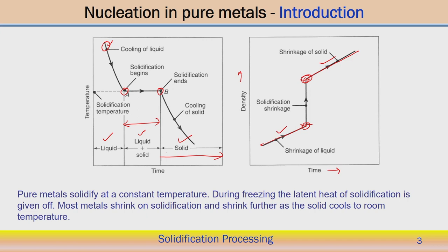Once we reach the solid phase, density gradually increases with further cooling. The slope — meaning the rate of density increment — can be different for the solid phase versus the liquid phase. These are the typical time-temperature diagram and density versus time diagrams showing how to account for shrinkage. Pure metal solidifies at constant temperature, and during freezing, latent heat of solidification is given off. Most metals shrink on solidification and shrink further as the solid cools to room temperature.